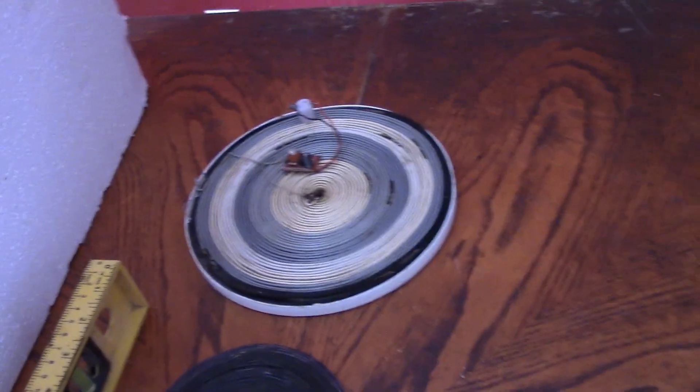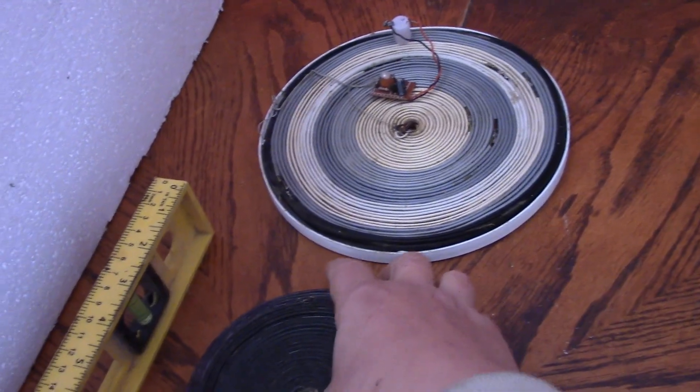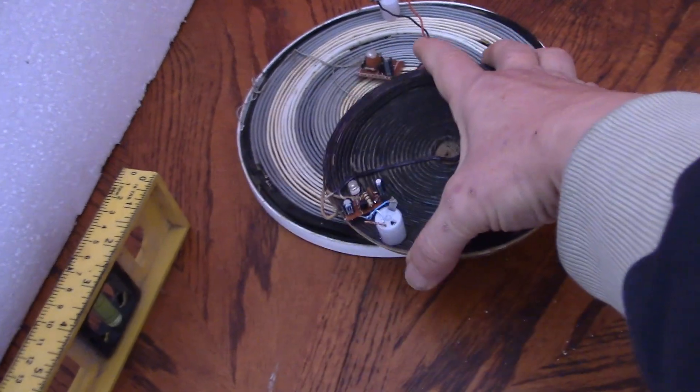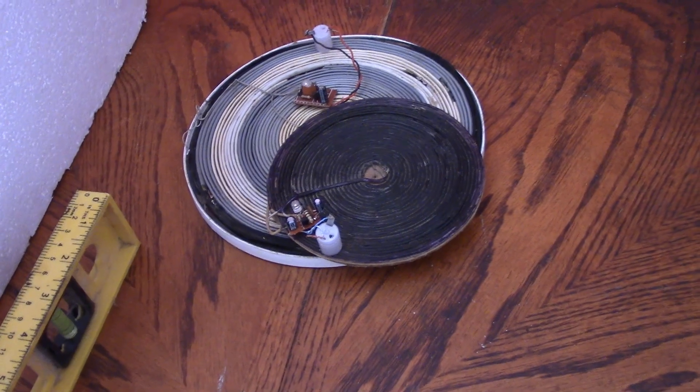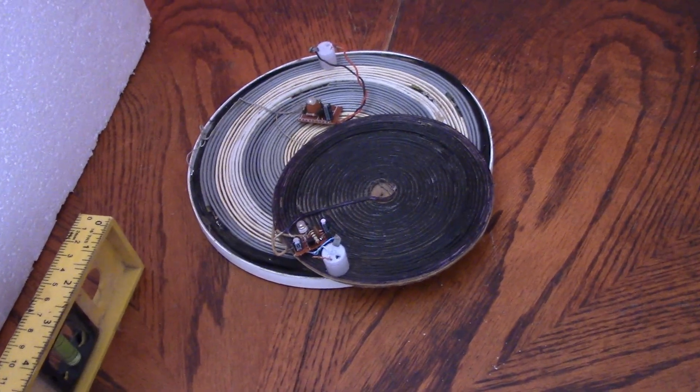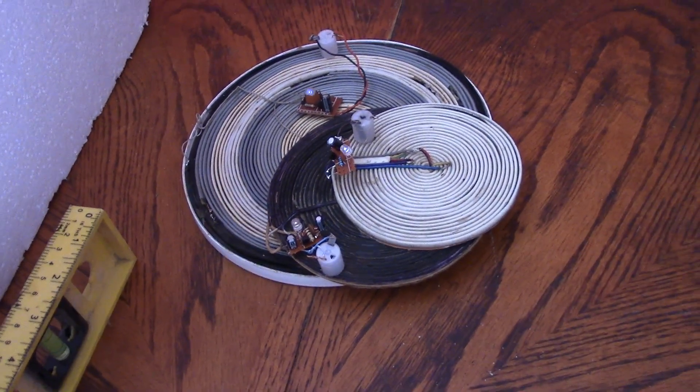So what happens if we put all three coils on top of each other? We'll use this one as the base, well it's the biggest. Put the black one on top. Those two are flashing together. We put the third one on top. All of them are now flashing at its speed.